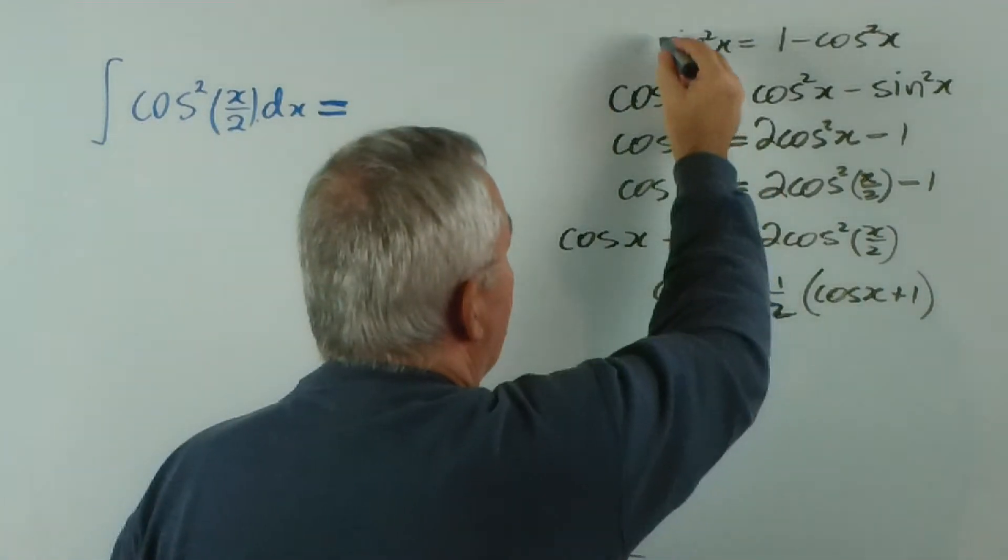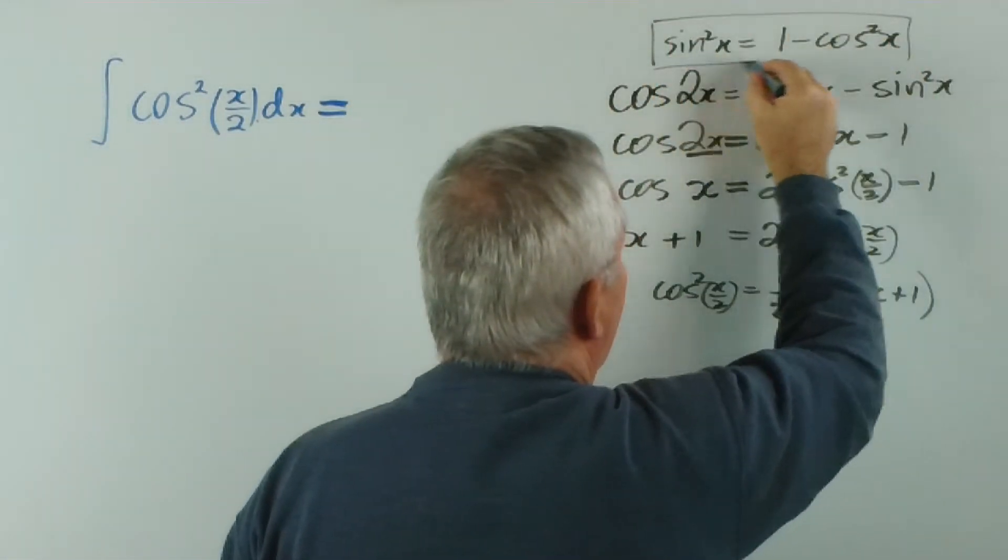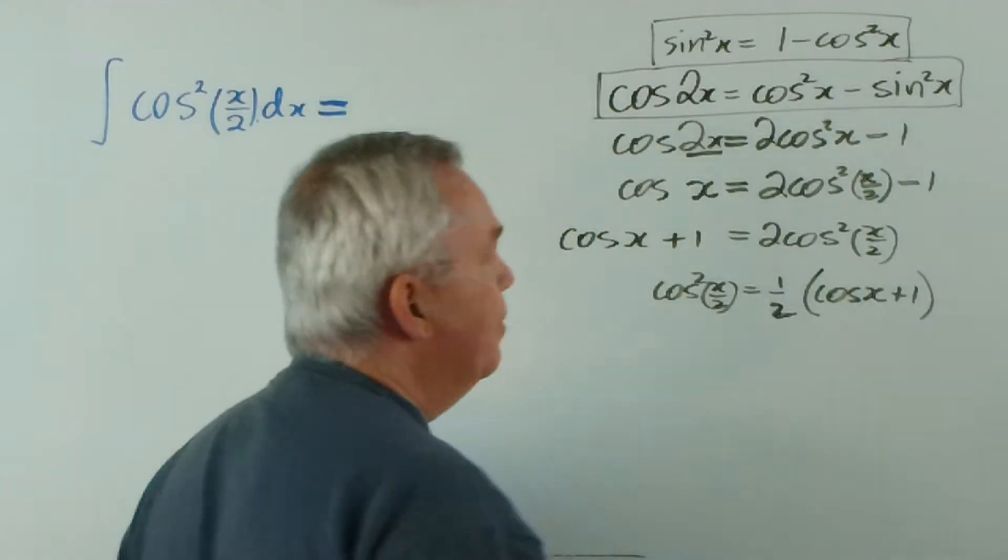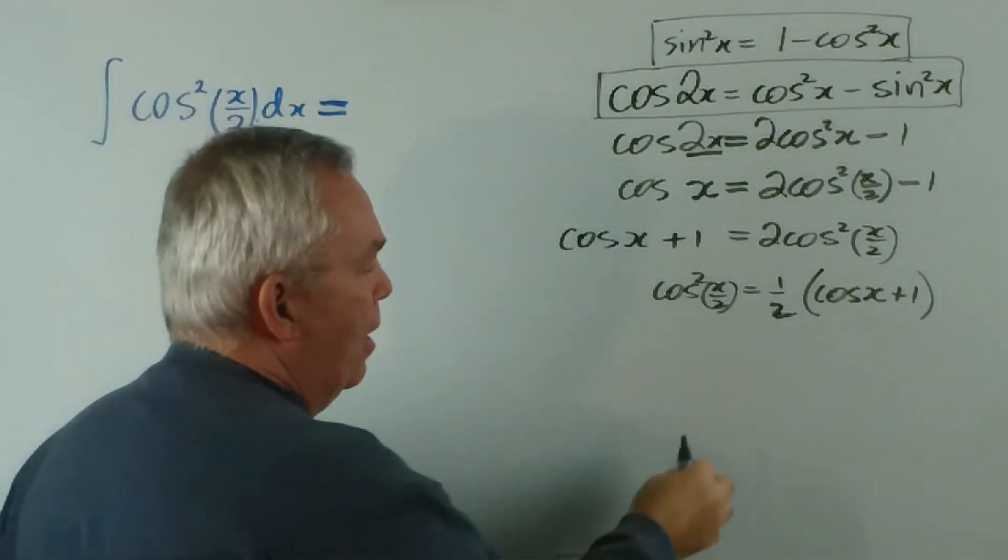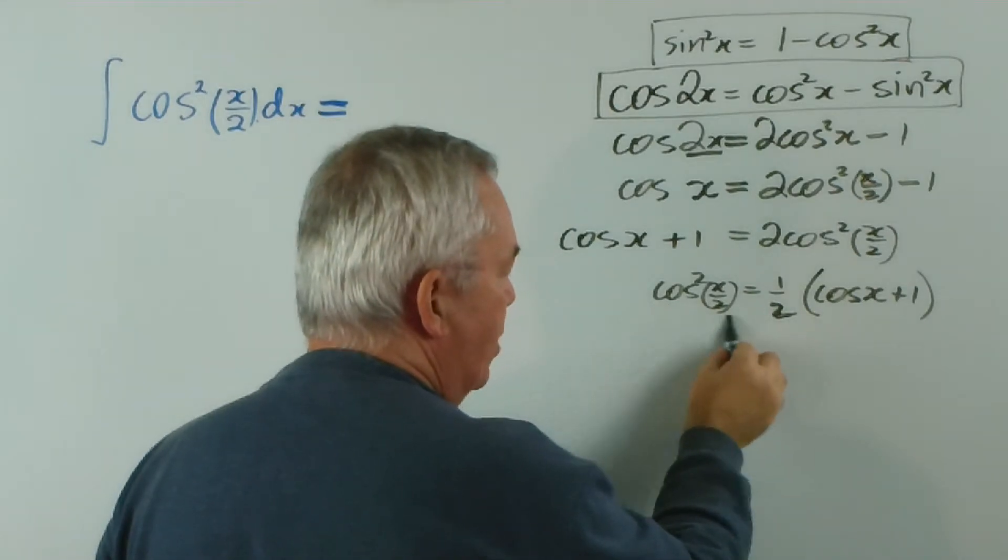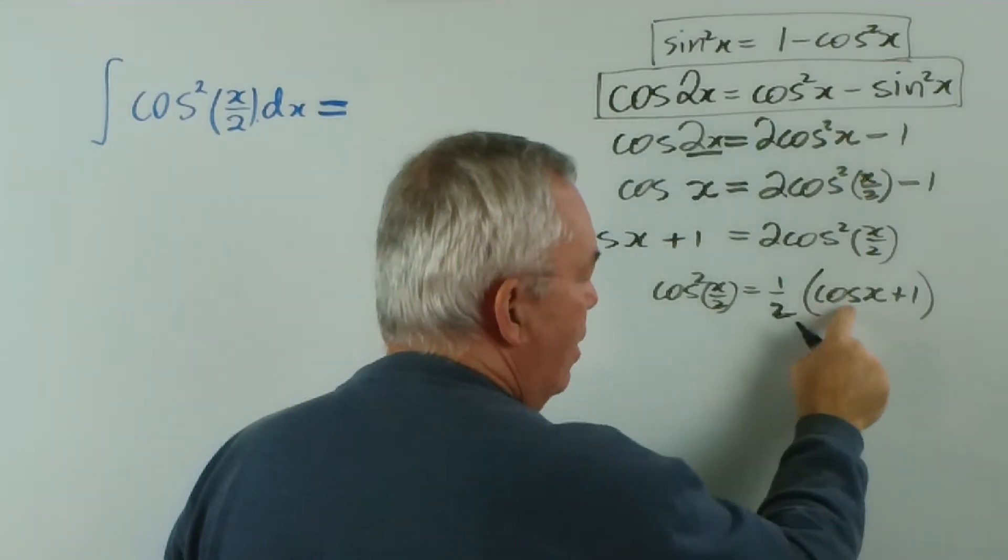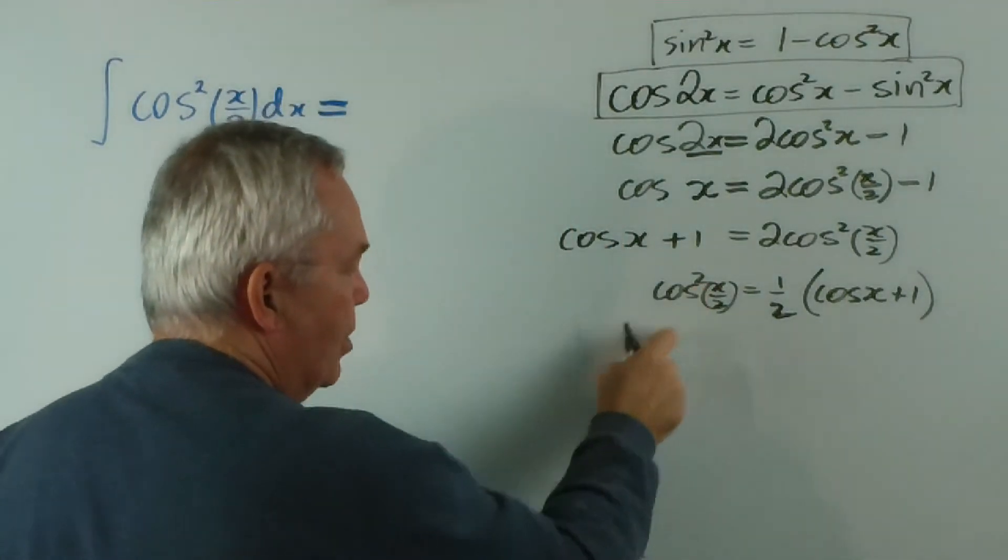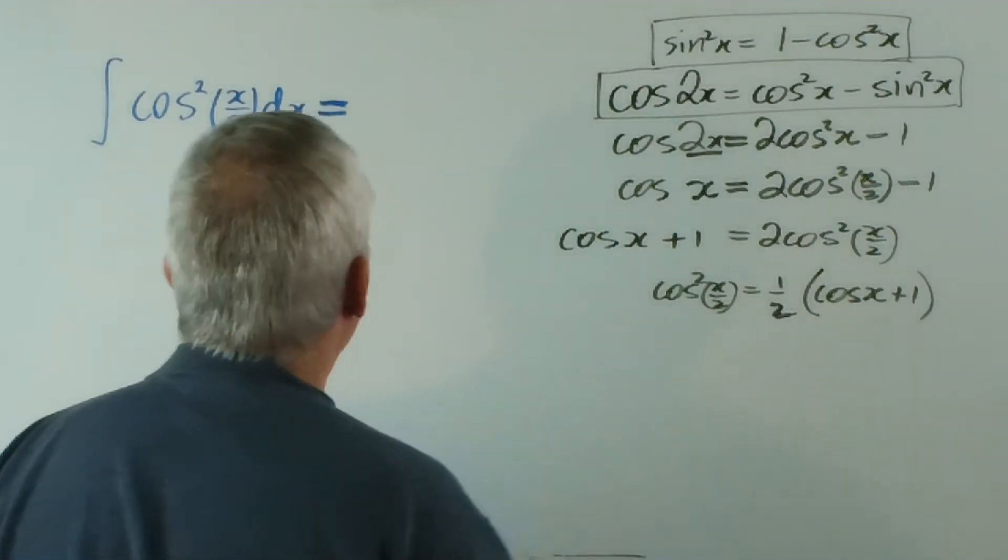And notice, by using this identity and this identity combined, we've been able to show that the square of this cosine term can be reduced to a simple cosine expression rather than a square. And that's much more easy to integrate.